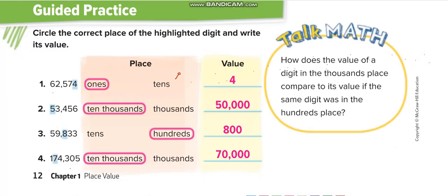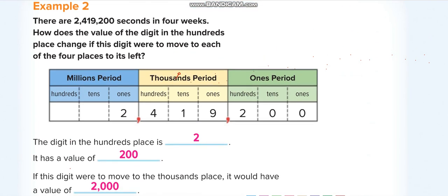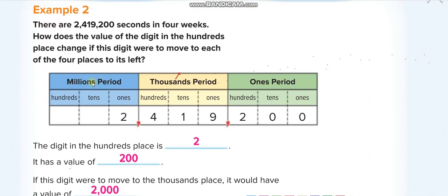In the millions period we have one million, ten million, and hundred million. This number reads: two million, four hundred and nineteen thousand, two hundred. We read the whole number in each period and then say the name of the period. Here we have two, so we read it as two millions. Then four hundred and nineteen thousands, and then two hundred. We don't say the name of the ones period.